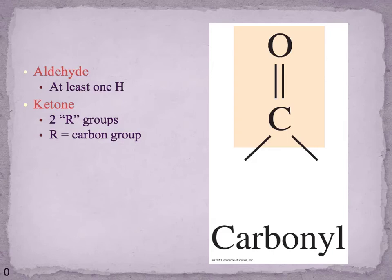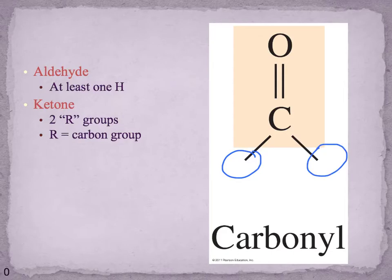Now we need to look at the other part of carbohydrates — not the alcohol group, but the carbonyl group. There are two types of carbonyl groups we'll encounter in carbohydrates: aldehydes and ketones. For an aldehyde, at least one of the two positions must be a hydrogen. For a ketone, we have to have two R groups — R meaning some chain of carbon — so we need a carbon in both positions.